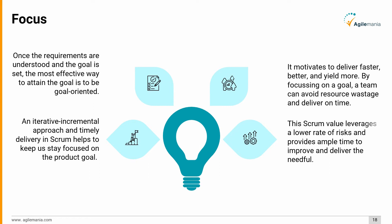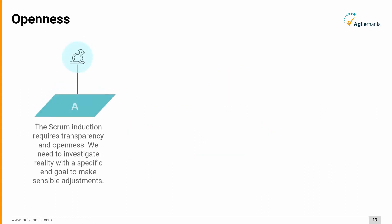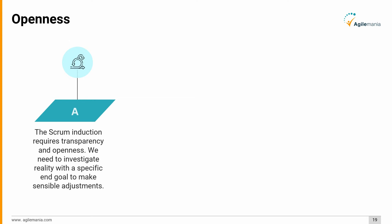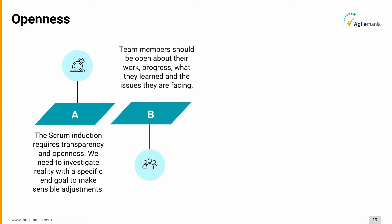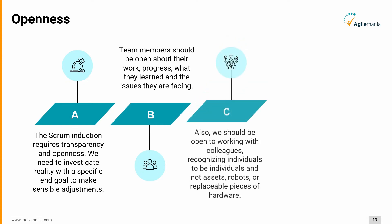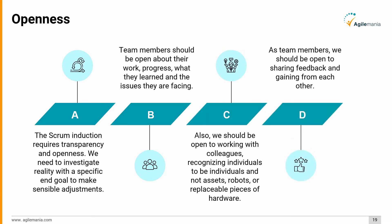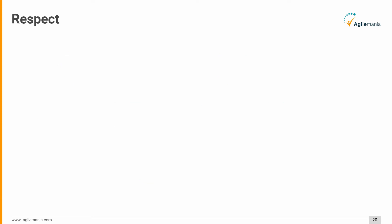Third, openness: Scrum requires transparency and openness. We need to investigate reality with a specific end goal to make sensible adjustments. Team members should be open about their work progress and the issues they are facing. We should also be open to working with colleagues, recognizing individuals as people rather than assets or replaceable pieces. As team members, we should be open to sharing feedback and learning from each other.